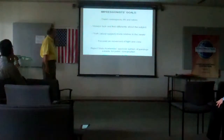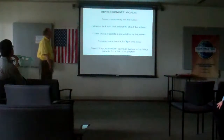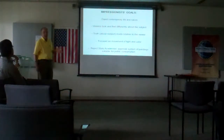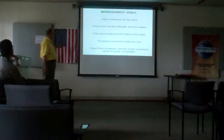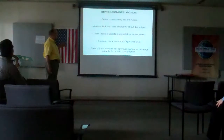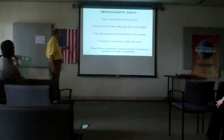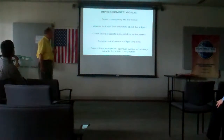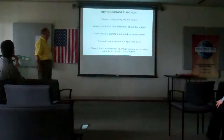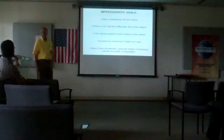The goal of the Impressionists was to depict contemporary life in nature. They didn't have their eye on the past like some other painting styles. Viewers look and feel differently about the subject — things aren't as clear, and the truth about the subject is made relative to the viewer. The pictures are mostly focused on movement of light and color. They also rejected the state academy's approval system and were not allowed to display their paintings for quite a few years. Eventually they formed their own exhibit in 1874.